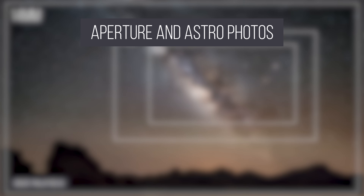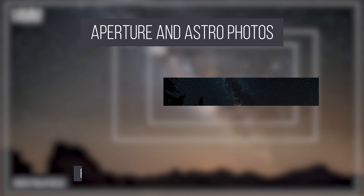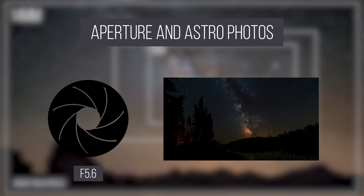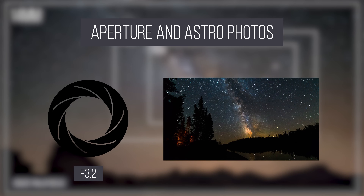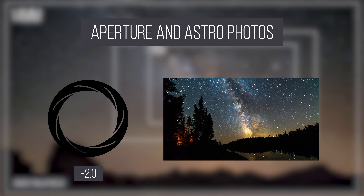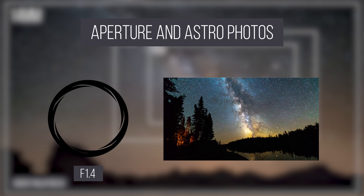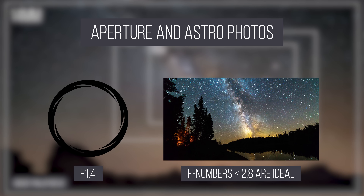How about aperture? As you increase the size of your lens's aperture, you are physically letting in more light into the camera body. For any night photography, an f-number of 2.8 or less is almost required.